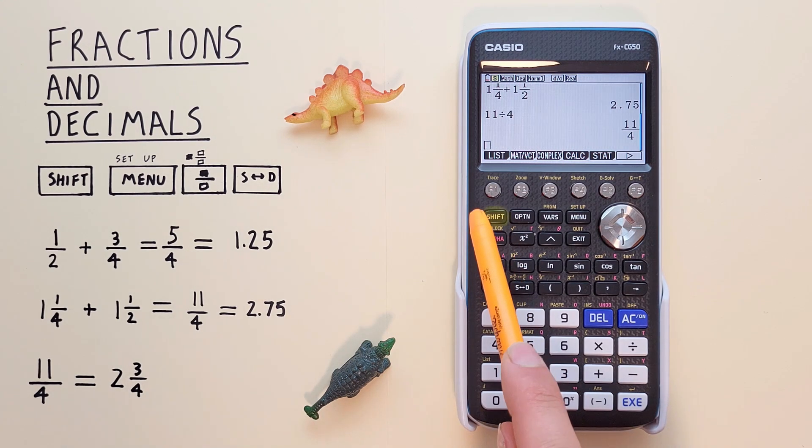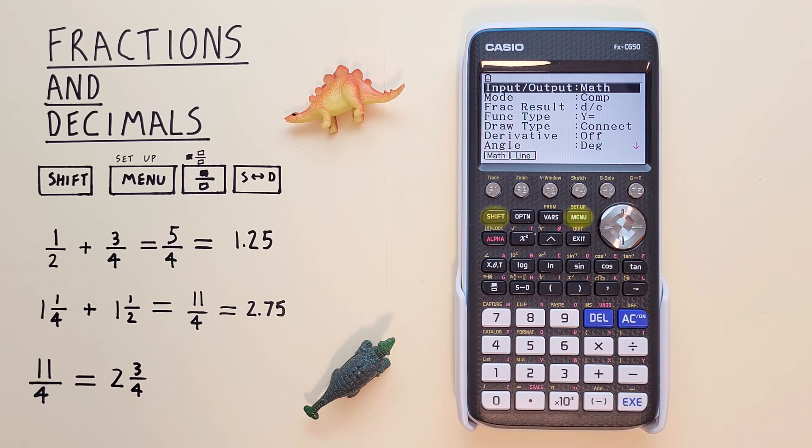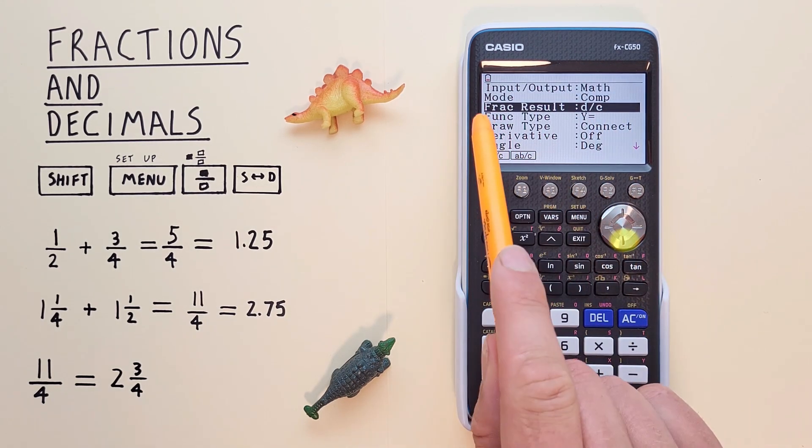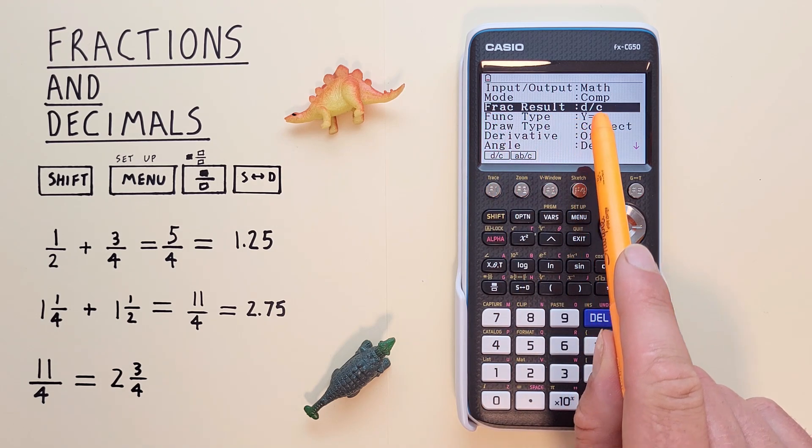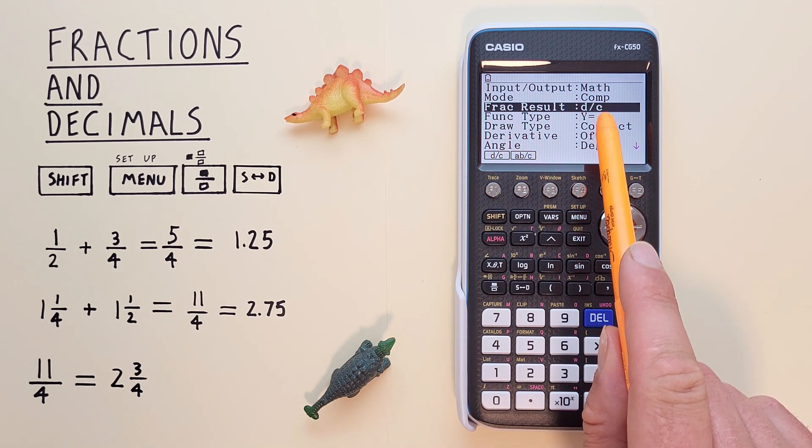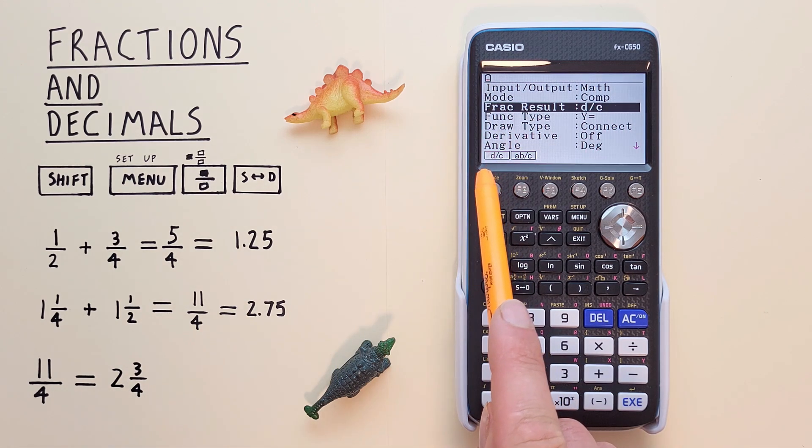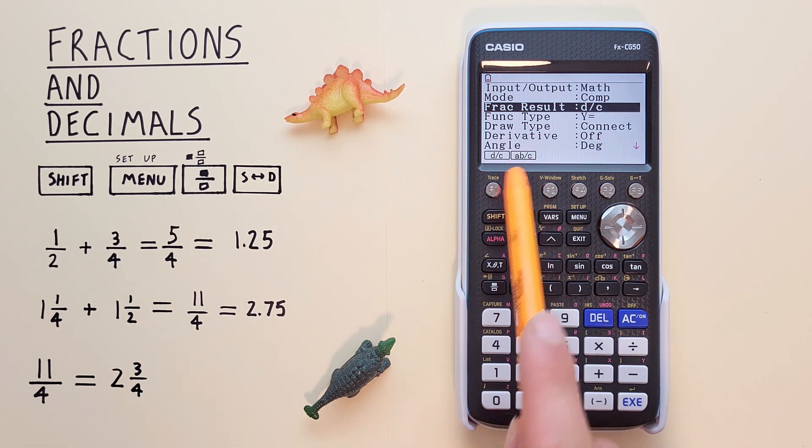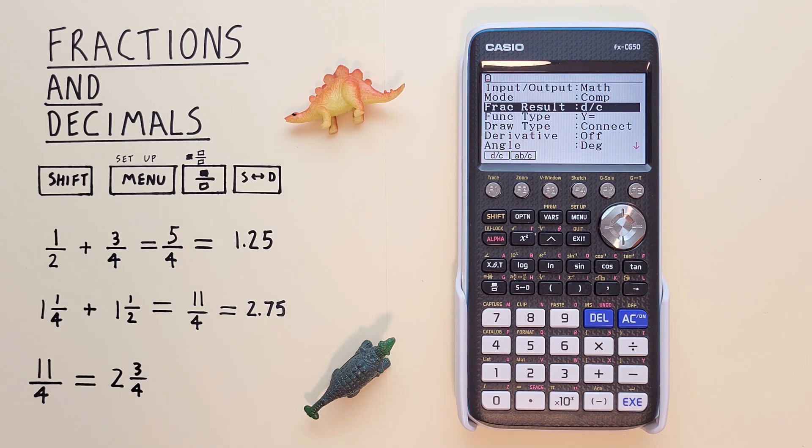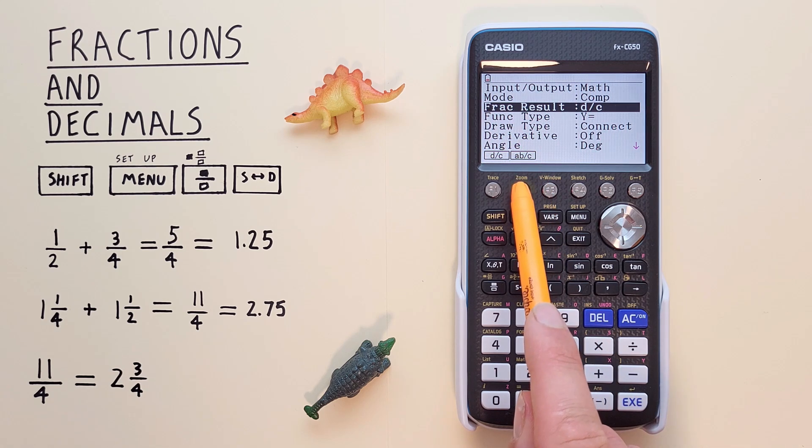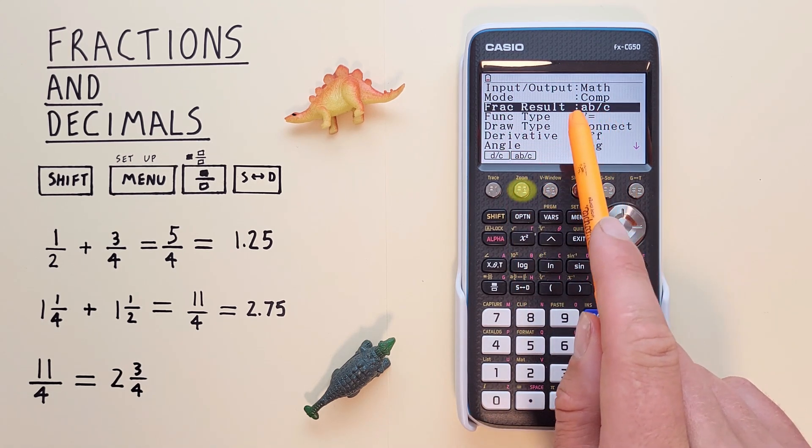To do that, we press SHIFT MENU to bring up this menu here. And then scroll down to FRAC results. We see it says D over C, which symbolizes the improper fractions. And down at the bottom, we can choose between improper and mixed fractions. If we want to change our results to get mixed fractions, we can choose A, B over C with the F2 here. We see that's changed.